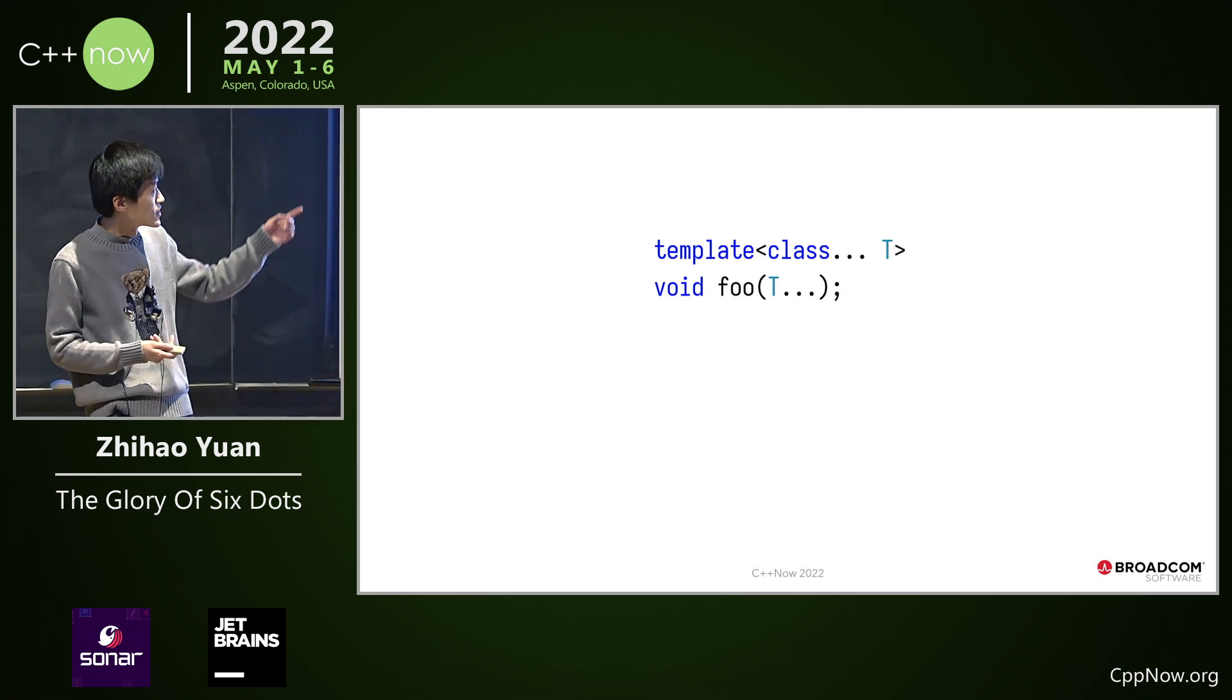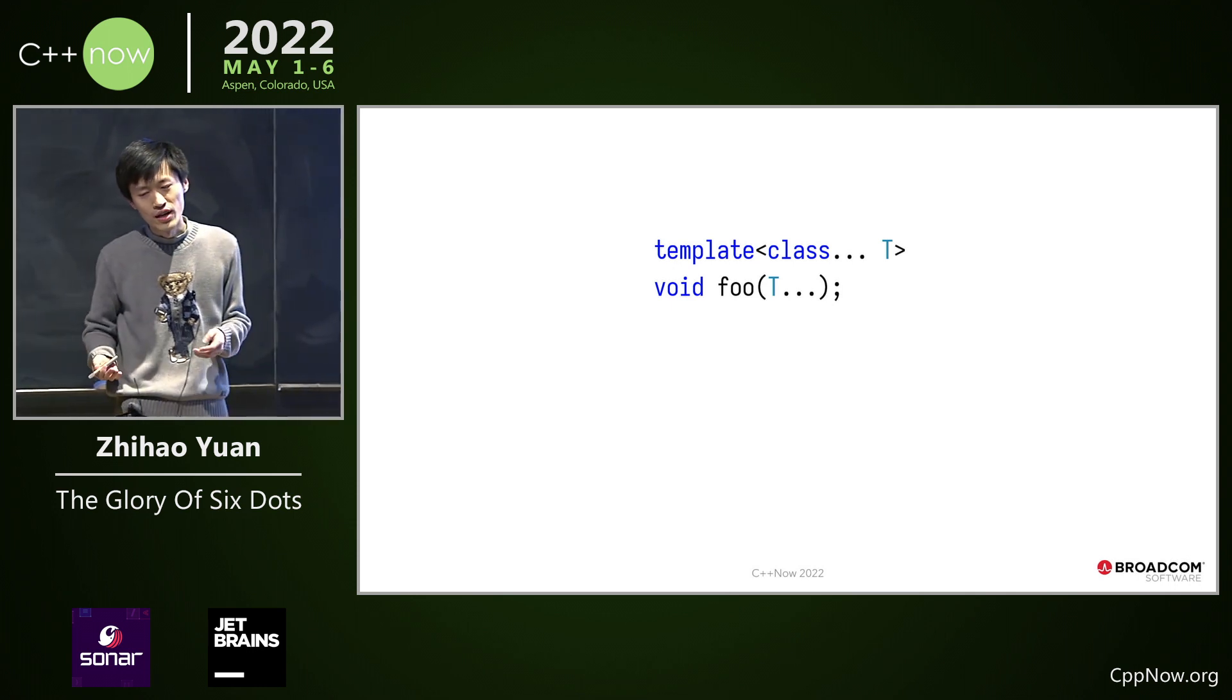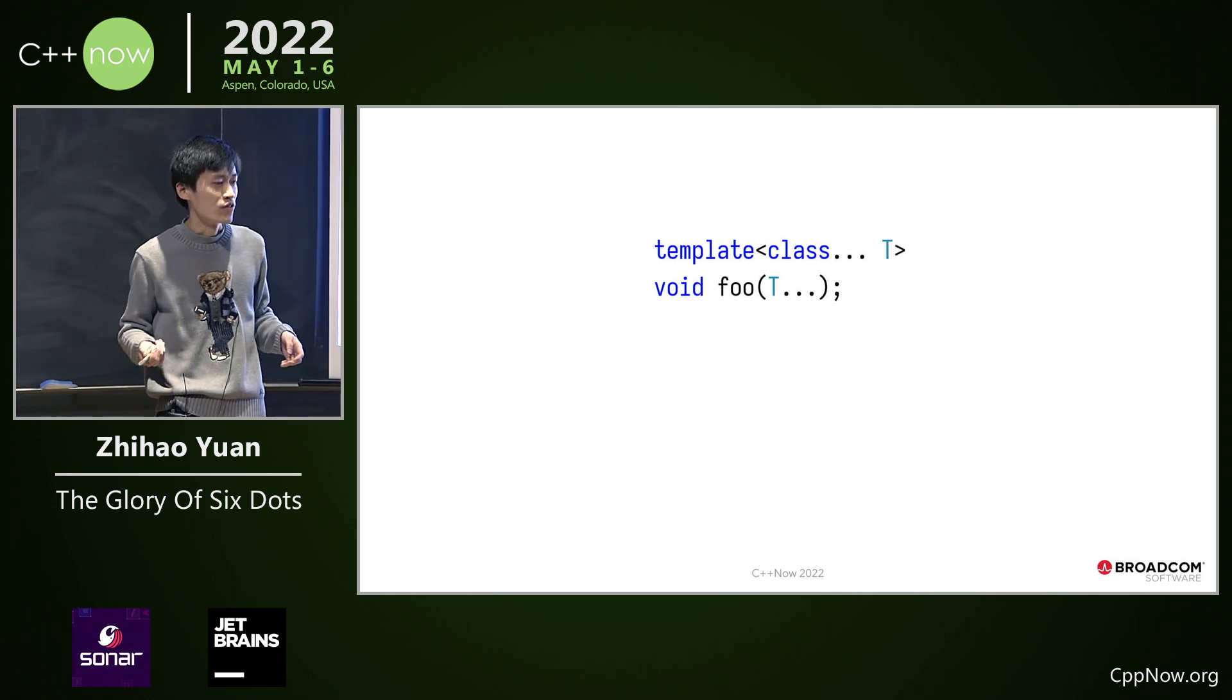So we know variadic functions, template functions in C++, right? If you look at the dot, dot, dot, that's a parameter pack. If you put arguments in it, those arguments may be of different types.